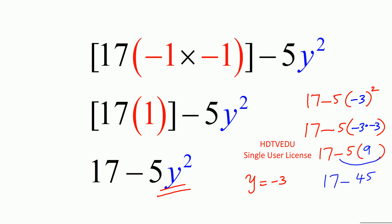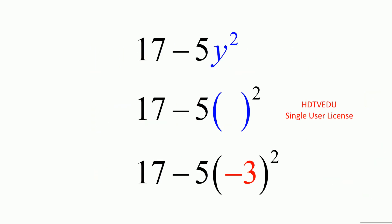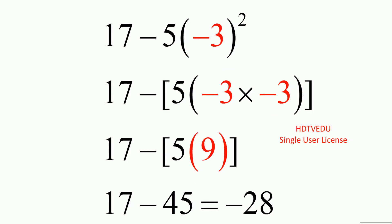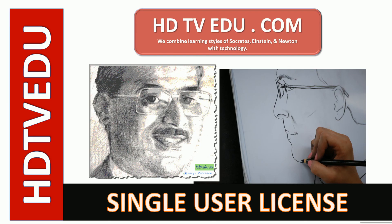What is negative 5 times 9? That gives us 17 minus 45, and what is 17 minus 45? Negative 28. So again, here are the steps: y is equal to negative 3, so we get 17 minus 5 times y squared. Negative 3 times negative 3 is positive 9. Positive 9 times negative 5 is negative 45. Negative 45 plus 17 is negative 28. That is our answer. This is George Matthew signing off — good luck.